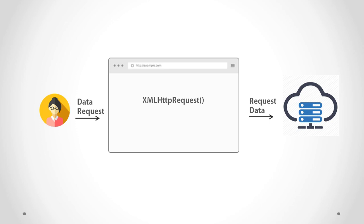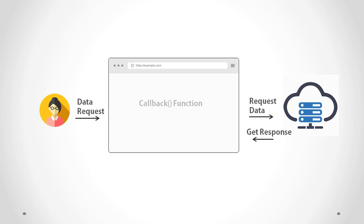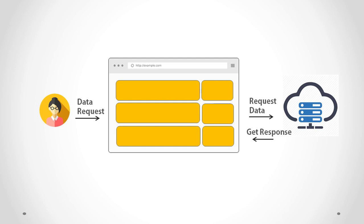The web server interacts with the database using server-side languages like PHP, Python, ASP.NET, etc. Using server-side languages, we retrieve data from the database. This data is then sent to the XMLHttpRequest callback function in XML, JSON, or any other format. When you have data in the callback function, you can display it in the browser — you can access the retrieved data and display it on the webpage without reloading the complete page. This process is known as an AJAX request.